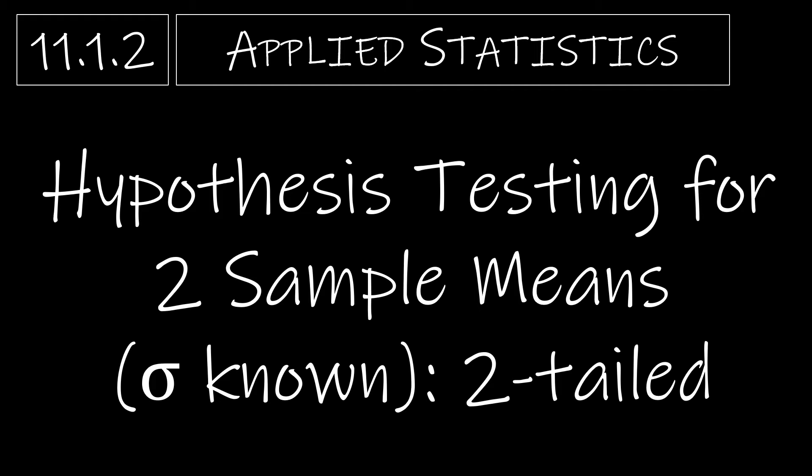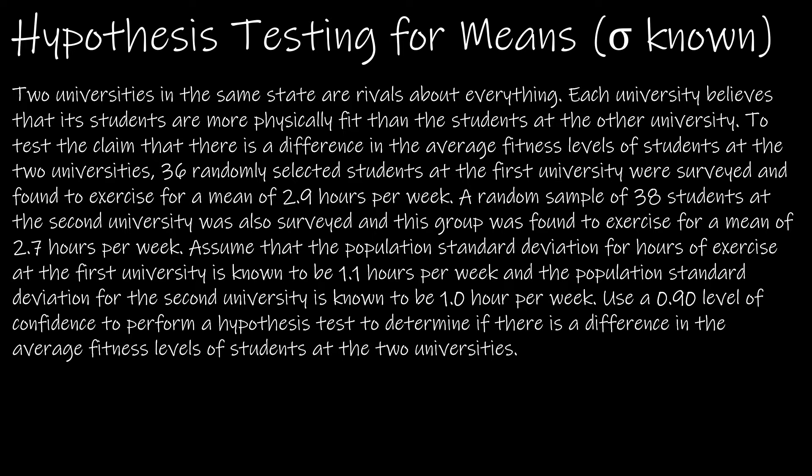In this video we're going to take a look at two-tailed tests for two sample means where sigma is known. If you'll notice I did not include that summary page like I usually do, because a two-tailed test is the exact same summary page as the one-tailed test, so we're just going to go straight into an example.